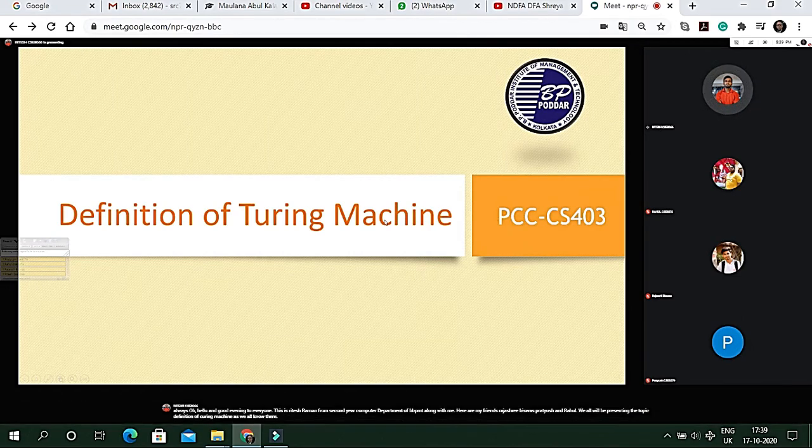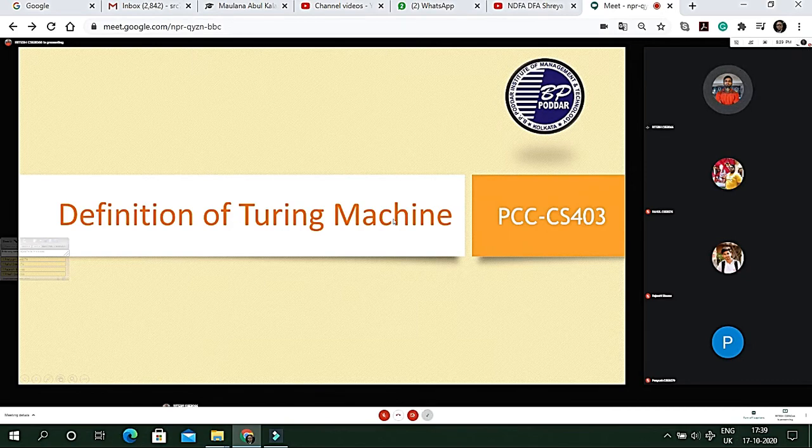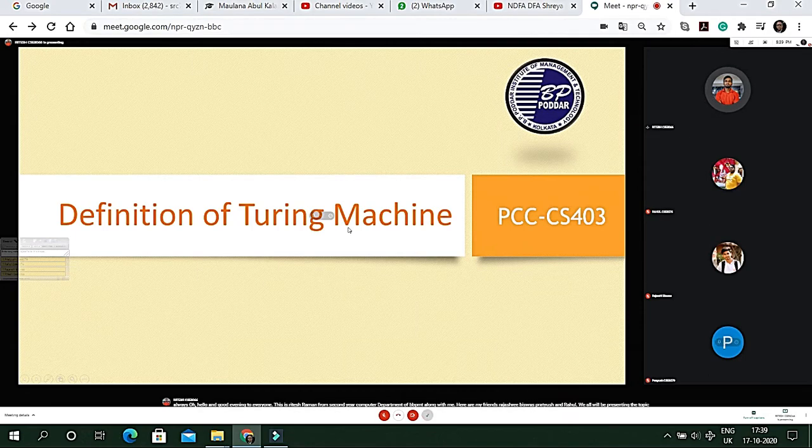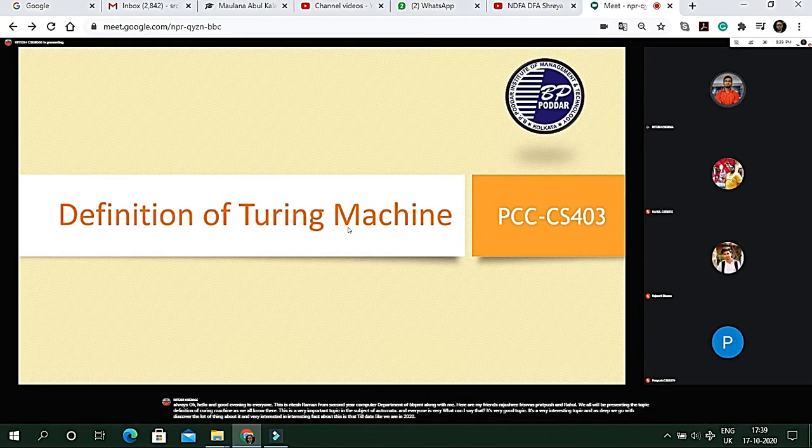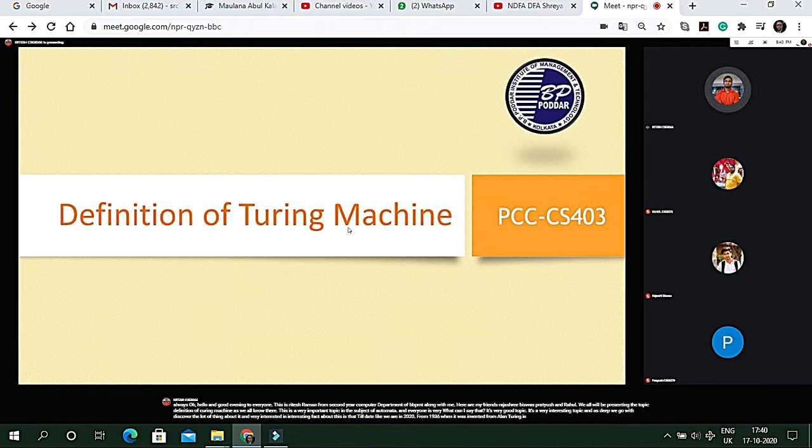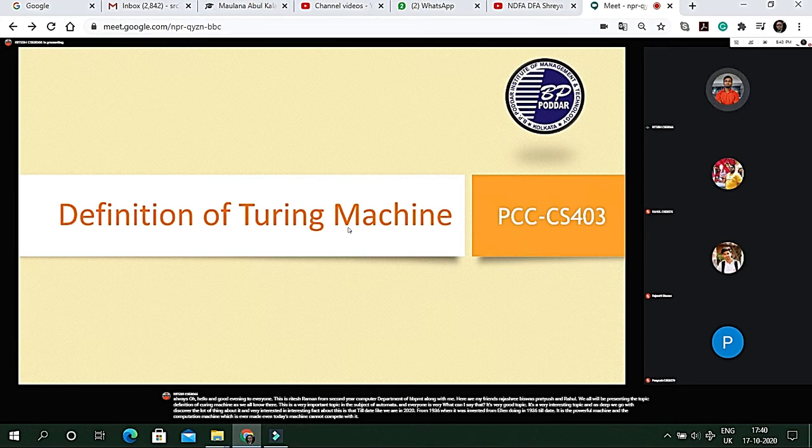As we all know that this is a very important topic in the subject of Automata. It's a very interesting topic and as deep we go, we've discovered a lot of things about it. A very interesting fact is that till date, we are in 2020, from 1936 when it was invented by Alan Turing, till date it is the most powerful computation machine which is ever made. Even today's machine cannot compete with it.